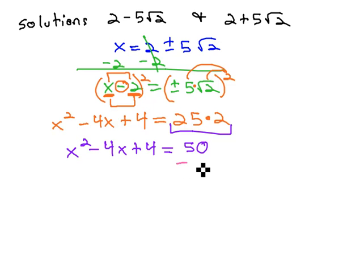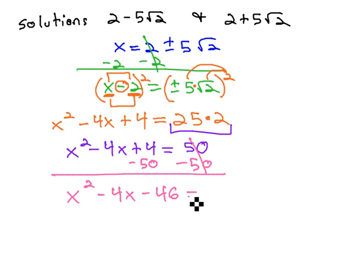And again, we like the equation to equal 0, so we will subtract 50 from both sides, giving us our final quadratic, x squared minus 4x minus 46 equals 0.